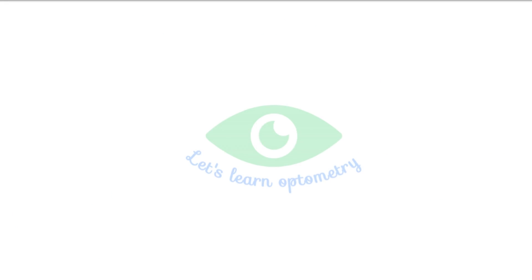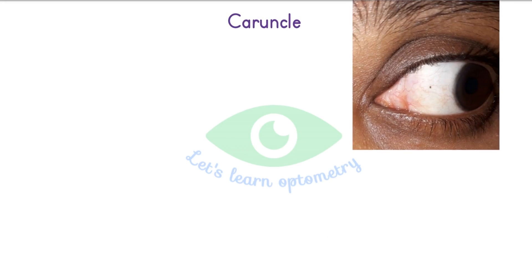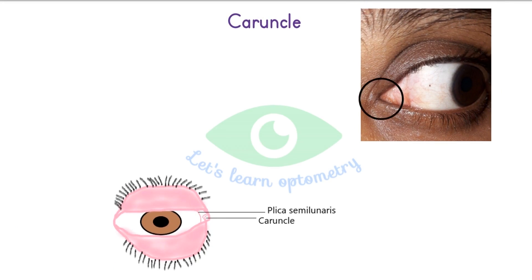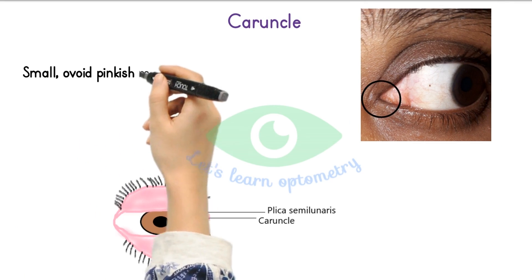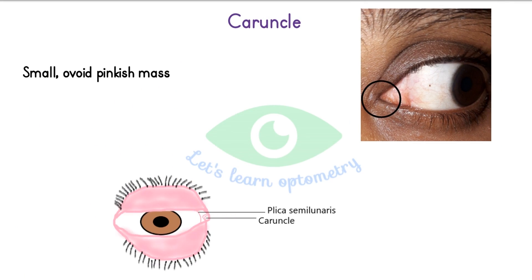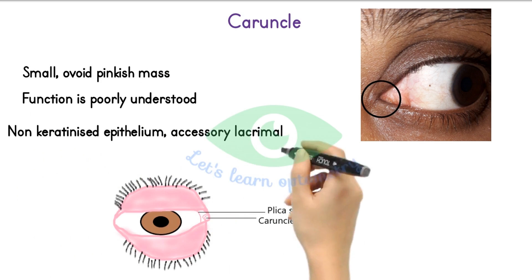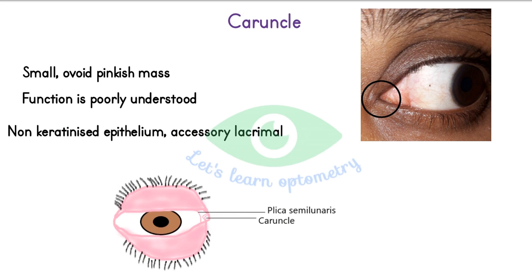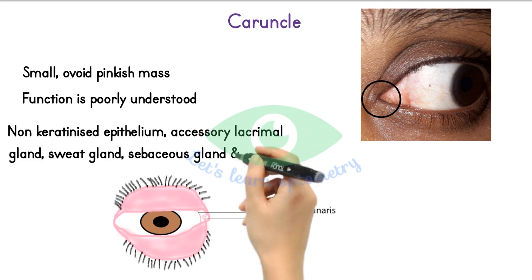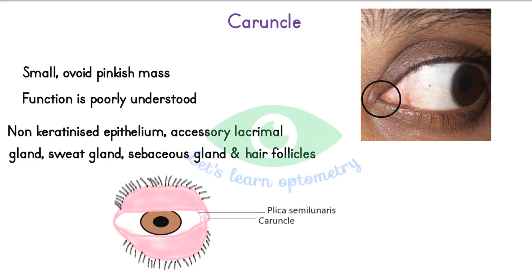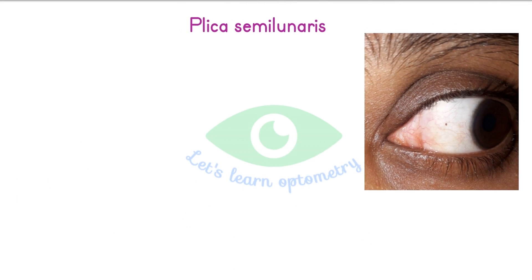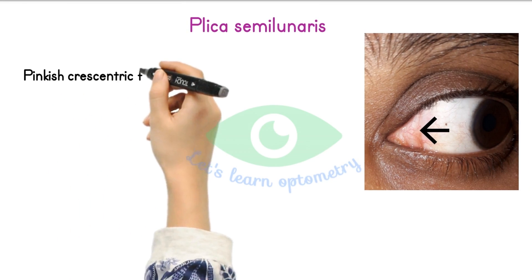Now we will see some special regions of conjunctiva. The first one is the caruncle — it is a small ovoid pinkish mass situated in the inner canthus, just medial to the plica semilunaris. The function of the caruncle is poorly understood. It contains non-keratinized epithelium, accessory lacrimal glands, hair follicles, sebaceous and sweat glands.